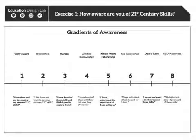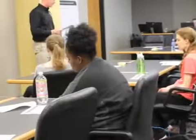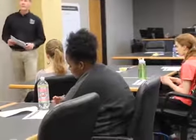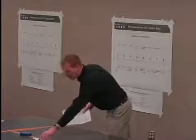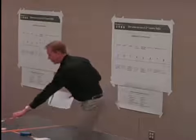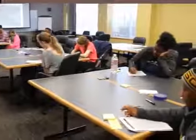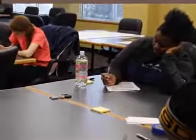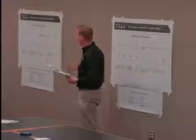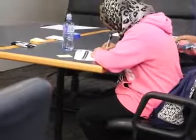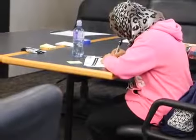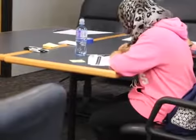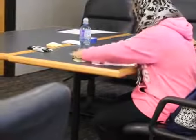Take a look at the scale and mark on it where you believe you are — very aware, to no awareness. Next, I want you to grab a set of sticky notes and start writing down 21st century skills that you know of. Use one sticky note per skill. For the next three or four minutes, just write as many as you can think of, one skill per sticky note, and put them on your table next to you. We'll be using those sticky notes in a minute.